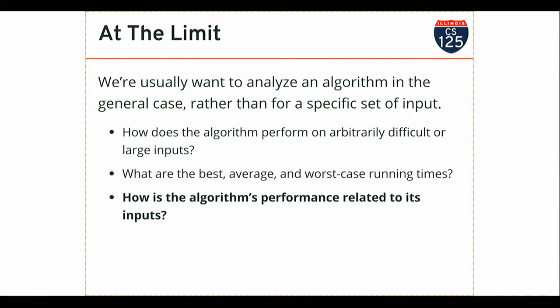We'll also try to reason about average case performance, which is very hard to do because average means over some set of inputs. The inputs provided to an algorithm are frequently the result of some feature of the problem it's solving, so average case depends on how the algorithm is being used. When we classify algorithms, the N in our big O notation is related to some feature of the algorithm's inputs, and that feature varies from problem to problem.